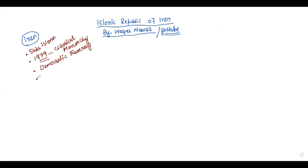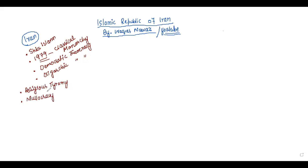کچھ رائٹرز ہیں جو ایران کو کہتے ہیں کہ it is an oligarchic theocracy. اور کچھ لوگ، کچھ رائٹرز جو ہیں، وہ اسکو religious tyranny کہتے ہیں۔ اور کچھ رائٹرز جو ہیں، وہ اسکو mullahcracy کہتے ہیں — M-U-L-L-O — mullahcracy، یعنی rule by mullahs۔ لیکن اگر ہم ان تینوں، چاروں ماڈلز کو تھوڑا سا بھی سمجھ رہے ہیں، تو آپ کو ایک چیز جو ہے وہ بڑی clear نظر آئے گی کہ ایران کے political structure میں تین elements تو لازمی ہیں۔